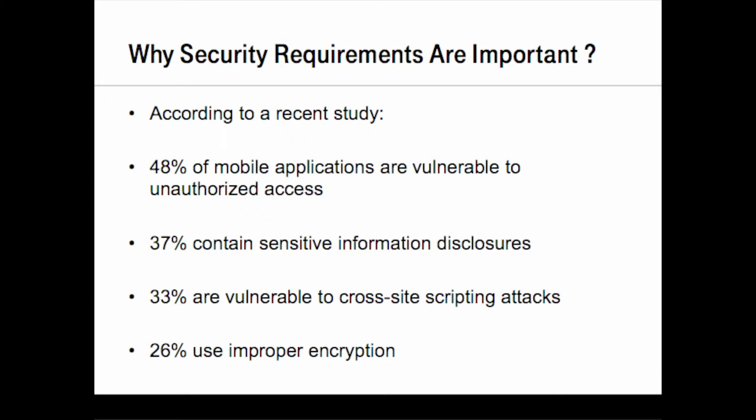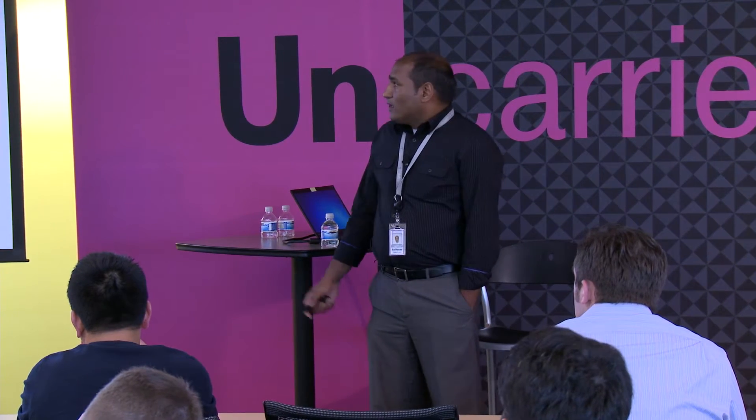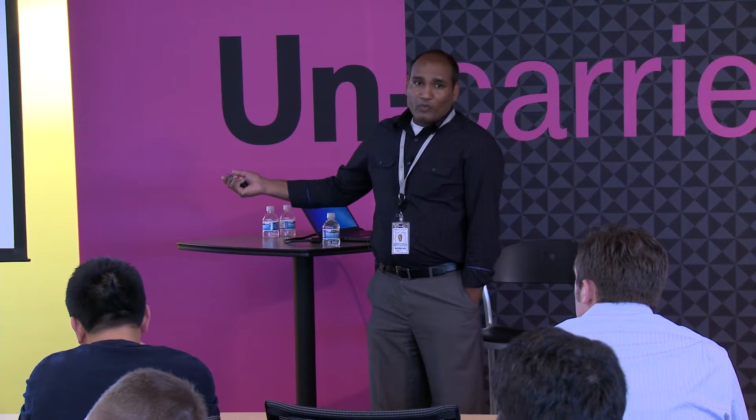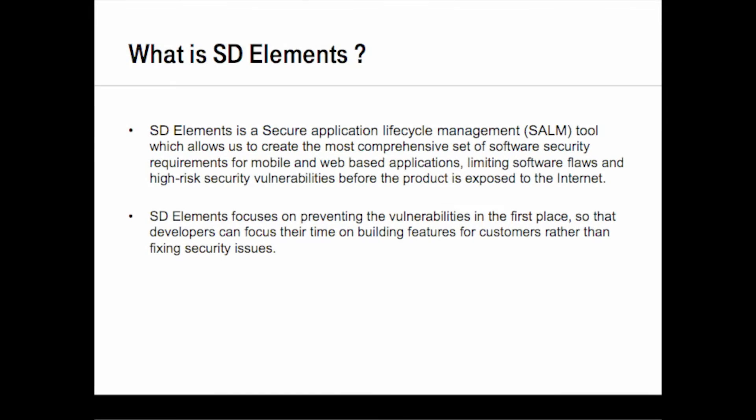So why are security requirements important? Not just in the mobile space — even in web applications, we see a lot of evolving security vulnerabilities and attackers are finding new ways to attack applications. This is a recent study done by Forbes magazine, and they identified that 48% of mobile applications are vulnerable to unauthorized access. These are pretty common, as Brian mentioned, and relate to OWASP. The OWASP Top 10 recommends all of these.